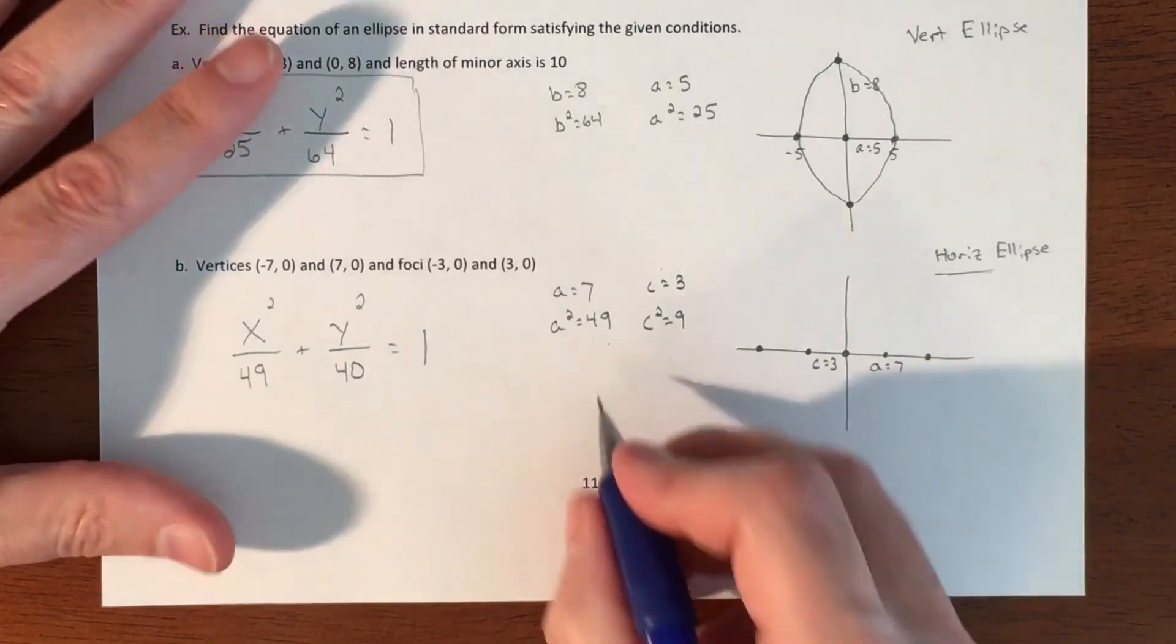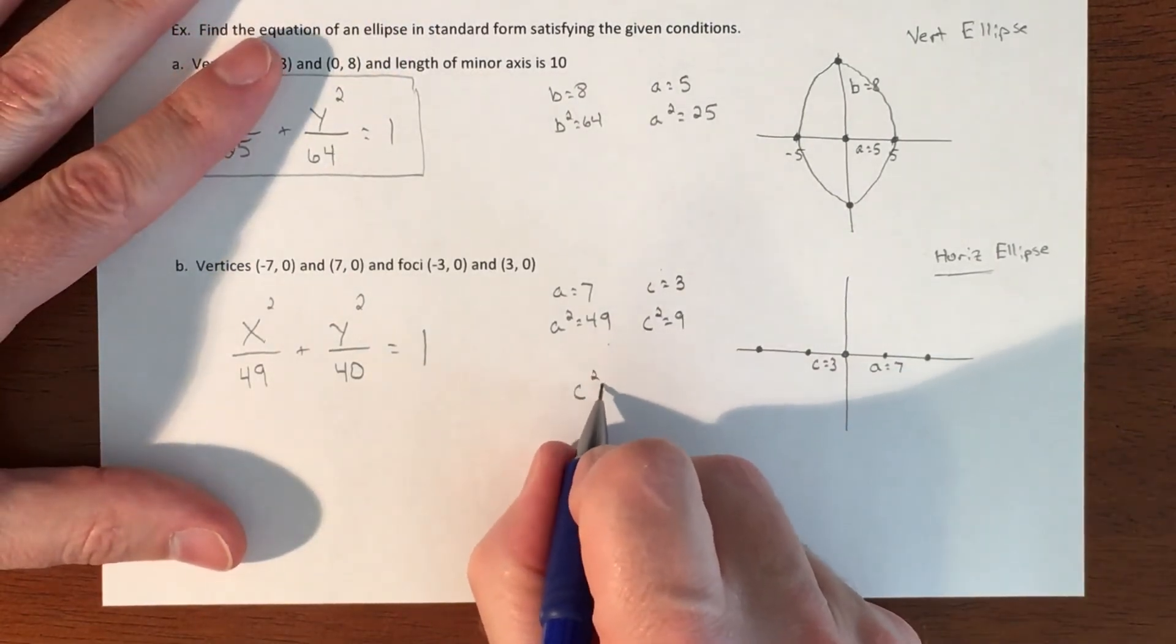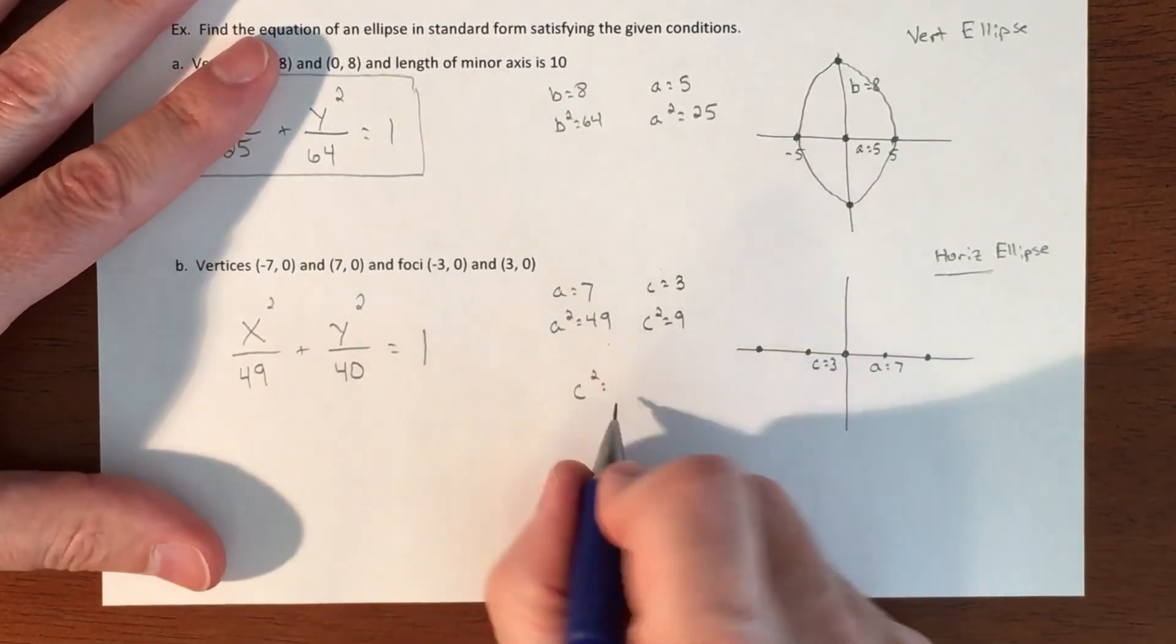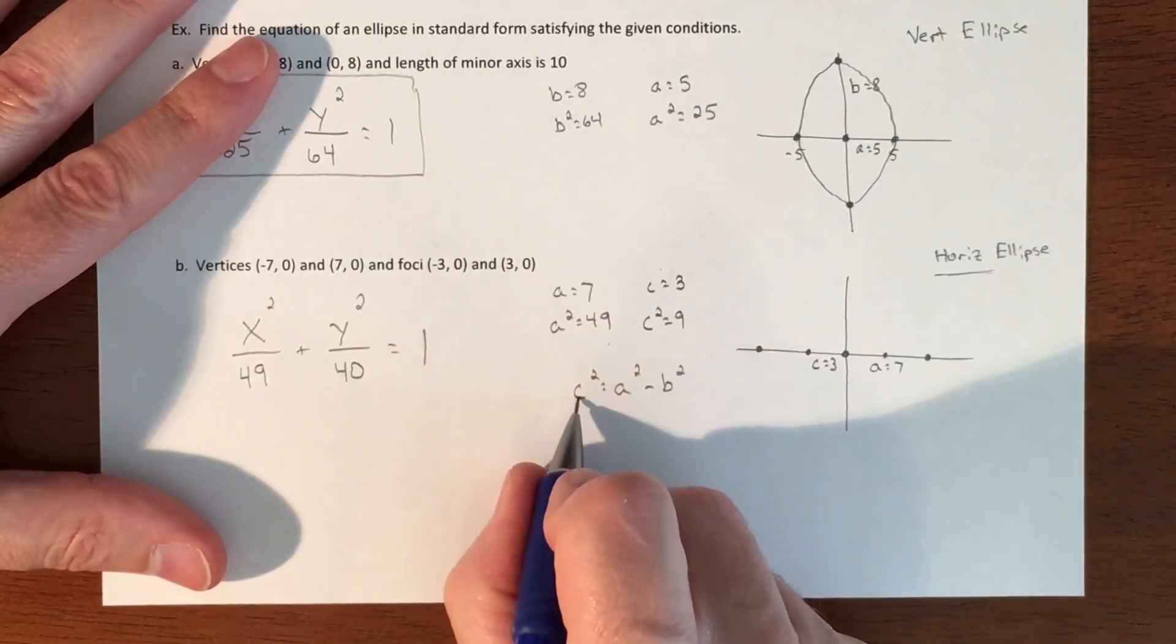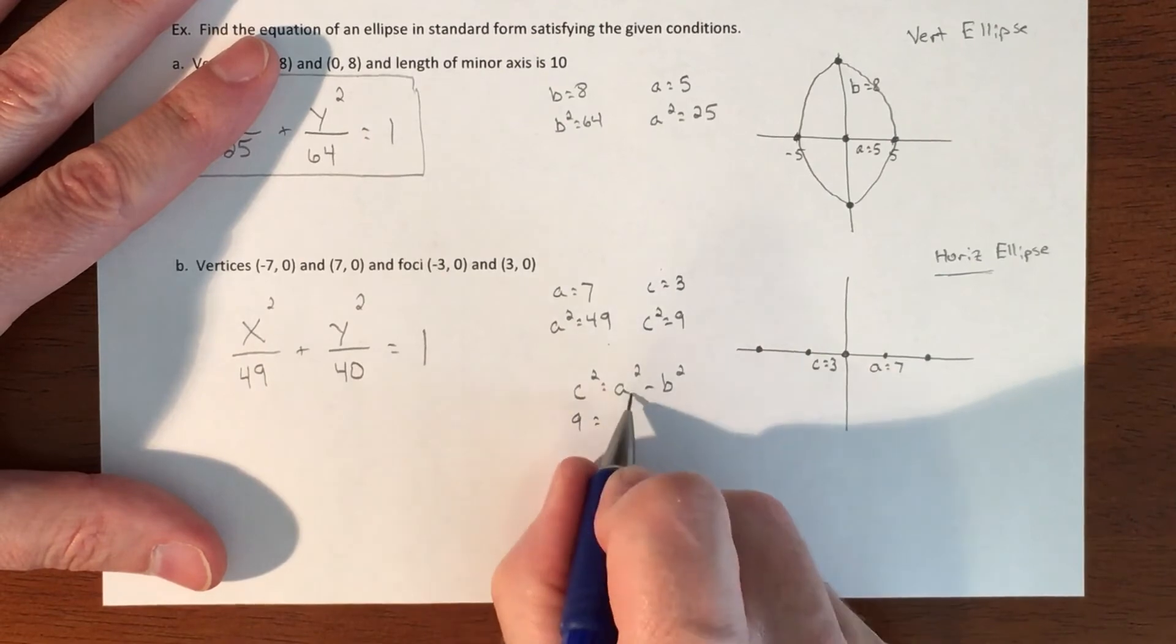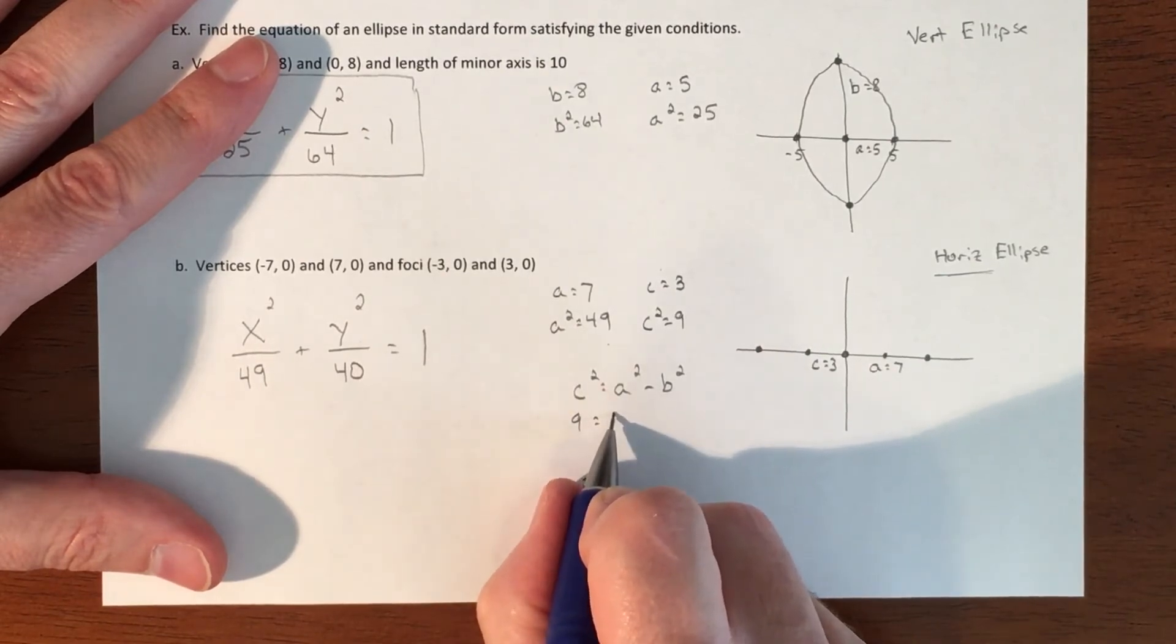The math behind it is that c squared, since this is going to be bigger, has to be a squared minus b squared. We know that this value is 9, we know this value is 49 minus b squared.